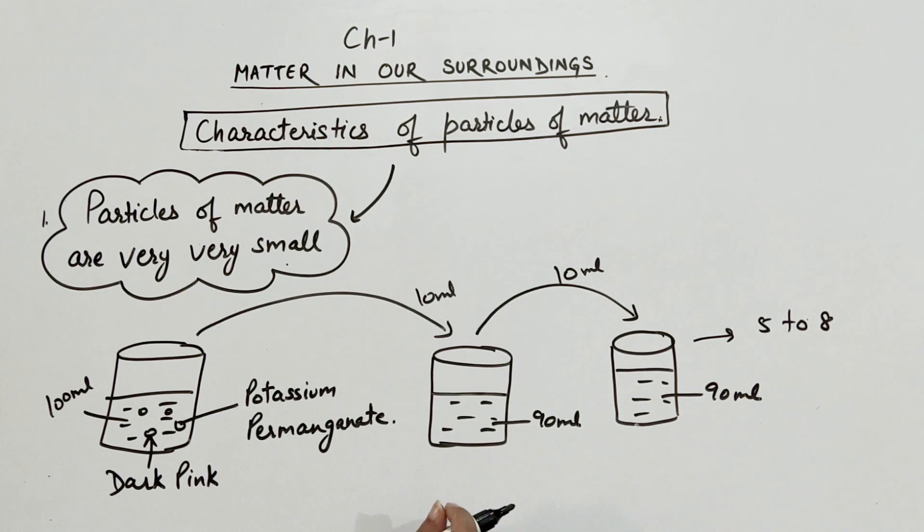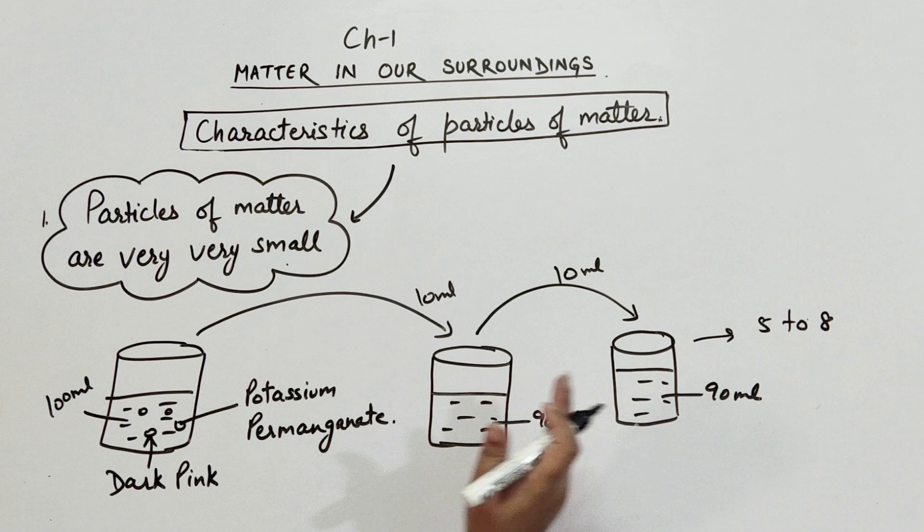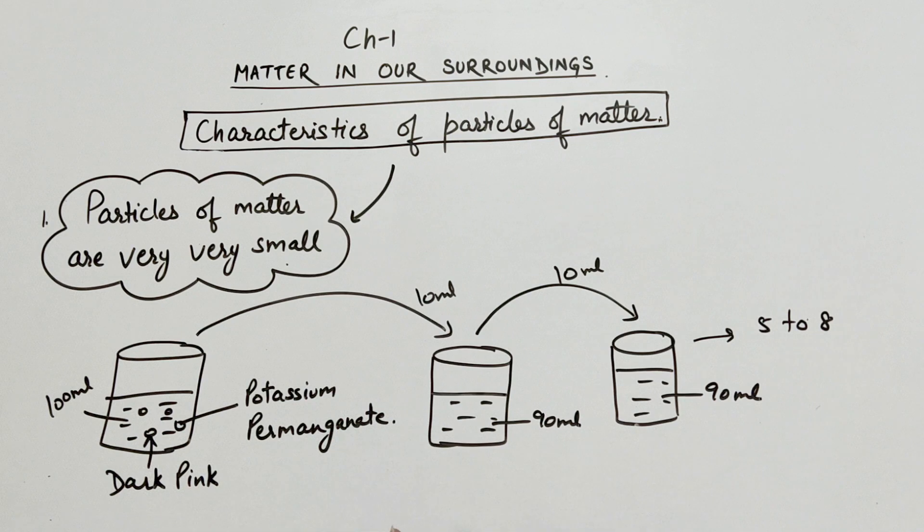So this experiment shows that just a few crystals of potassium permanganate can color a large volume of water. Hence we conclude that there must be millions of tiny particles in just one crystal of potassium permanganate.